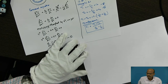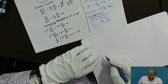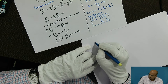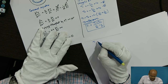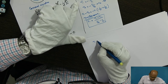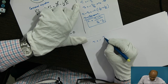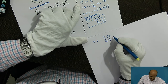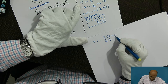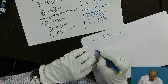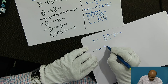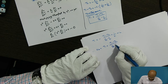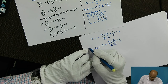Now we will find constant C2. I will substitute C1 into equation number 3. So Ti = −[(Ti − To)/(1/ro − 1/ri)] × (1/ri) + C2. Therefore, C2 can be written as Ti + [(Ti − To)/(1/ro − 1/ri)] × (1/ri). This is the constant C2.